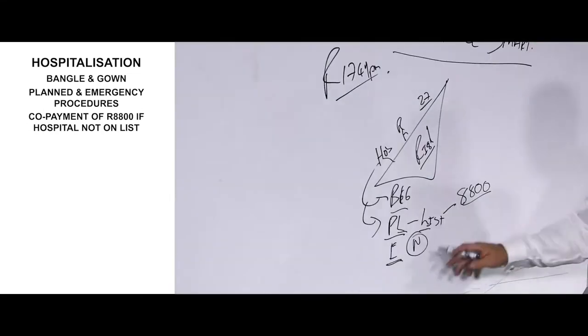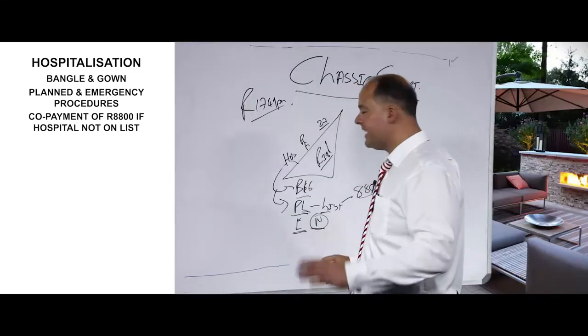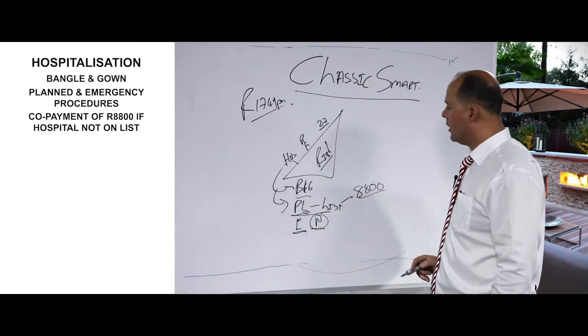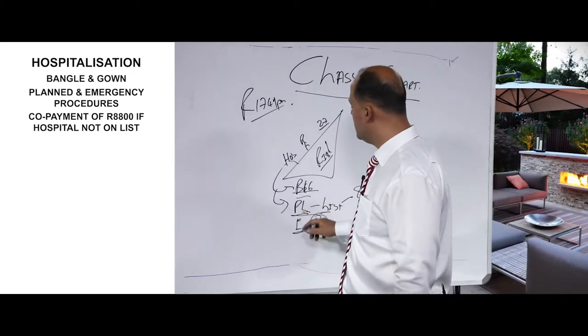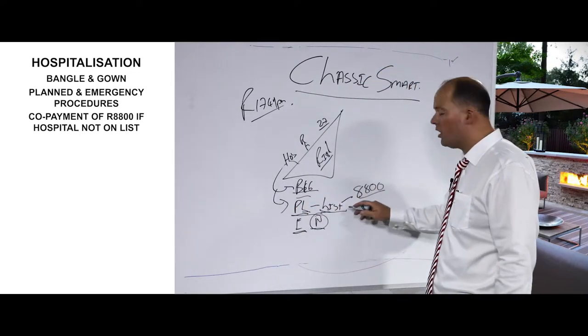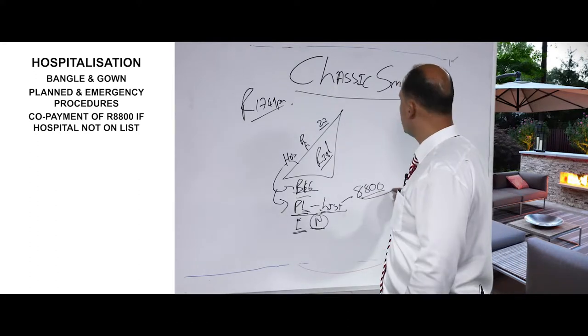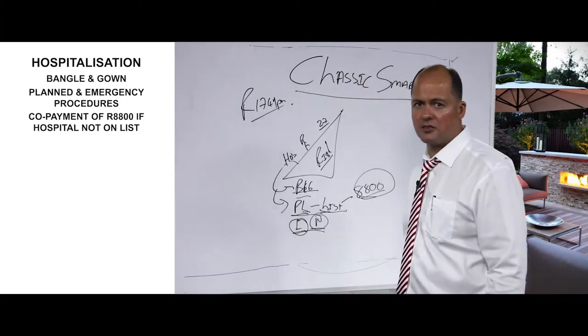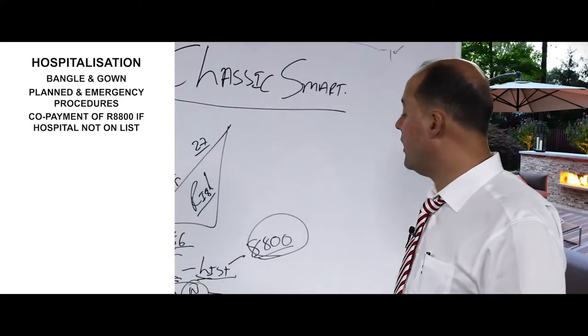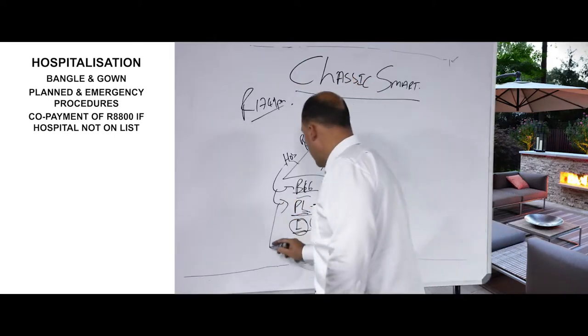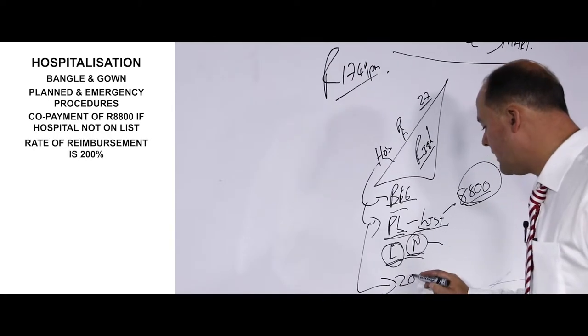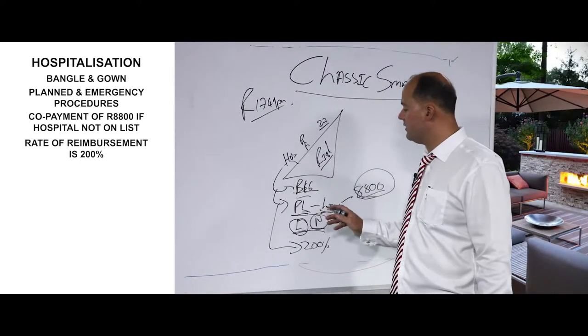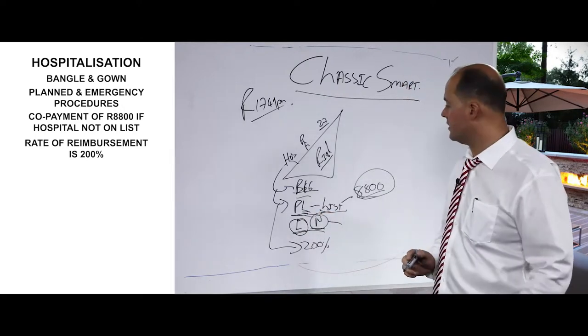If it's emergency, you could use the nearest hospital if there is a valid reason why a listed hospital could not be utilized. And the rate of reimbursement on this plan is 200% of the Discovery Health rate. So very good hospitalization, only thing is planned procedures you must use the list of hospitals.